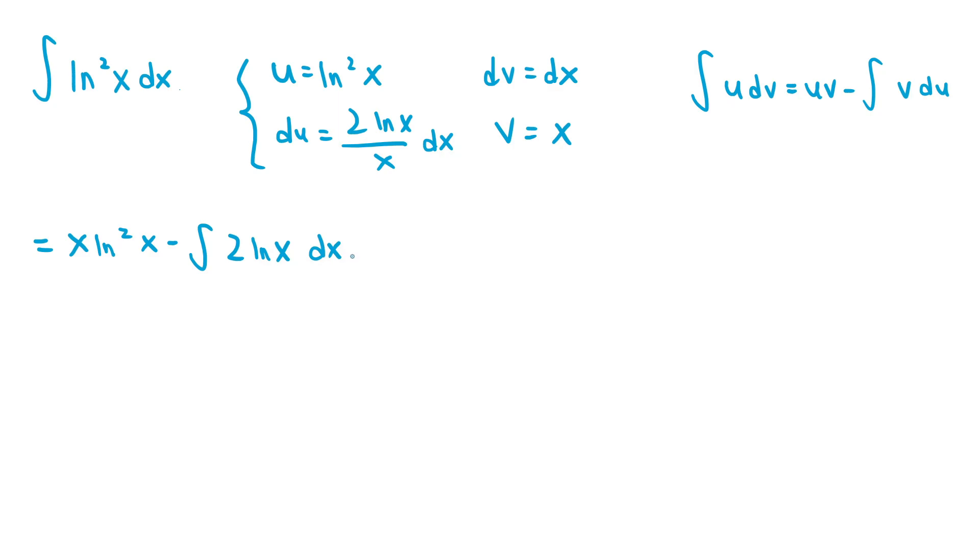To deal with the ln x in the integral we now have to compute, we need to use integration by parts again. So if we let u equal 2 ln x, then dv has to equal dx, which means du equals 2 over x dx, and v equals x.